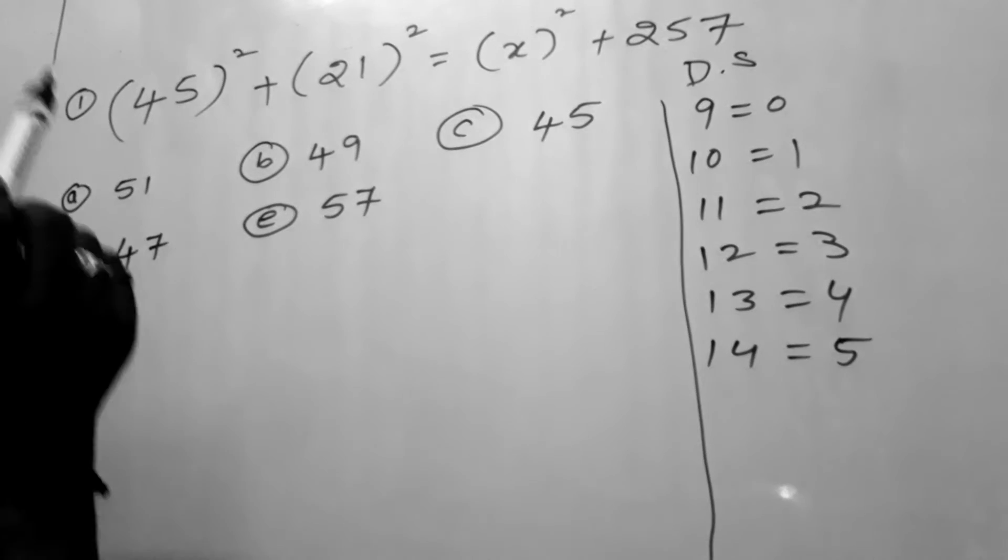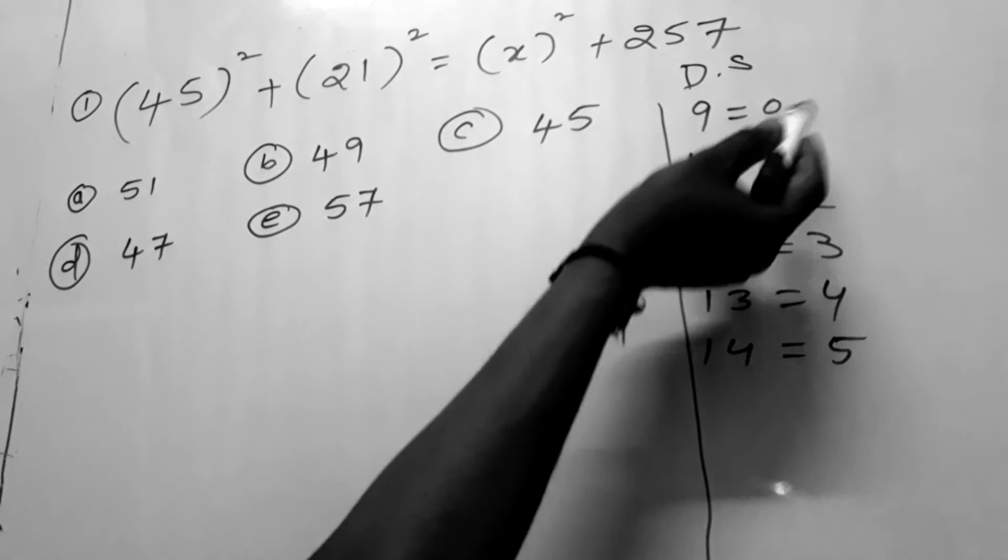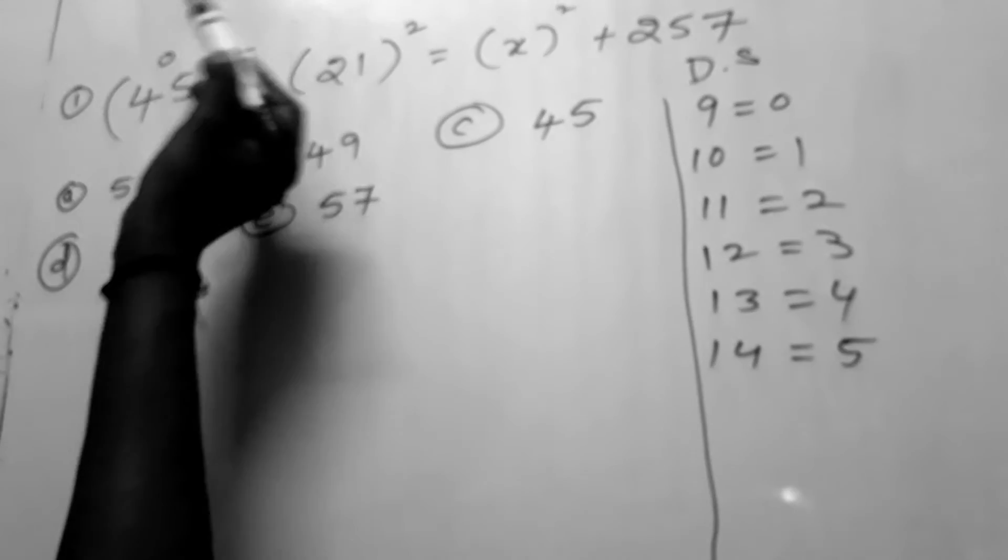4 plus 5 together is 9. When the sum of any 2 digits is 9, its digital sum is 0. So 9 means digital sum is 0, 0 square is 0 only.